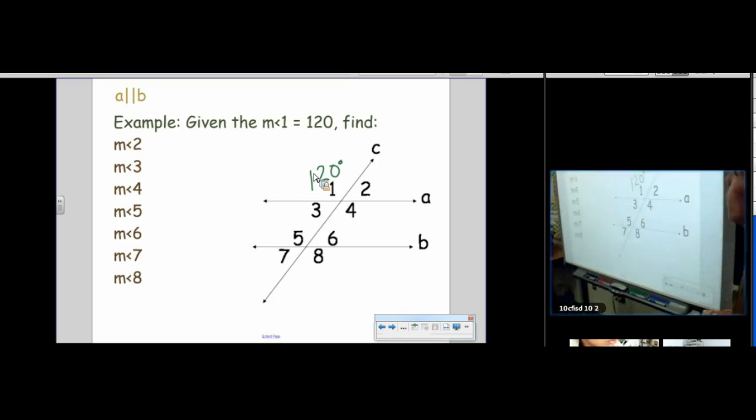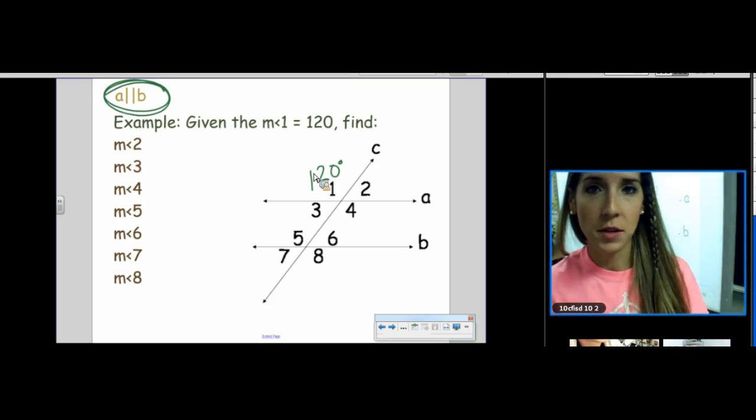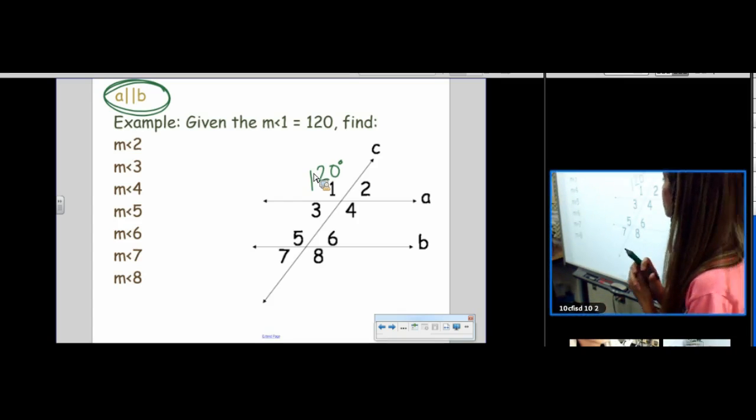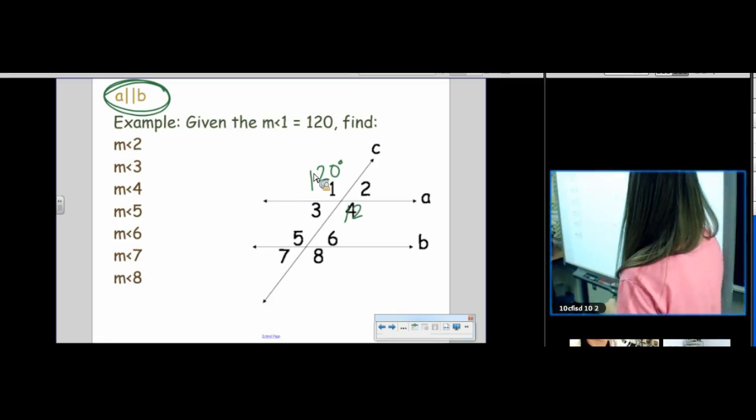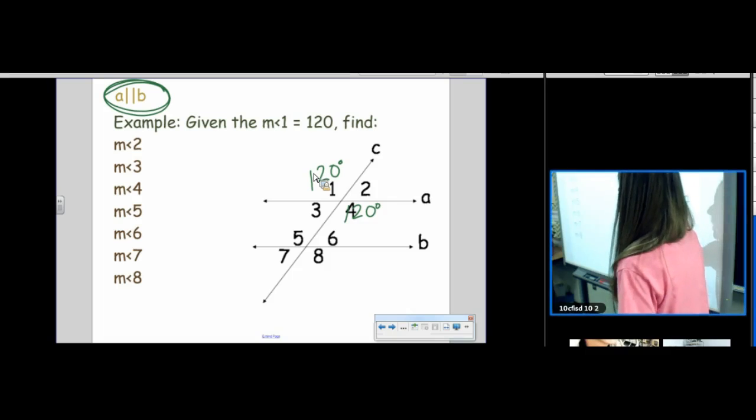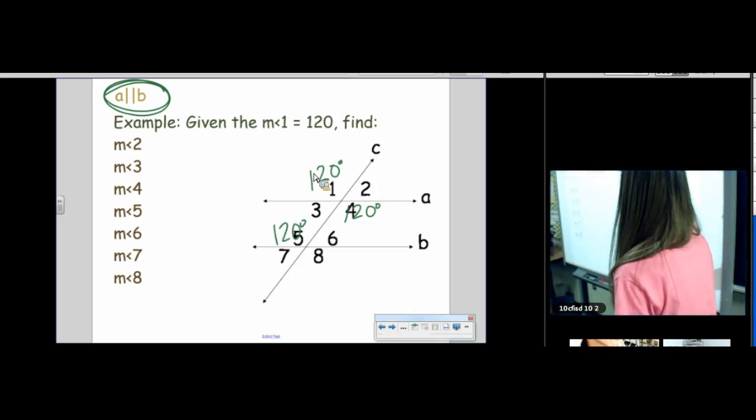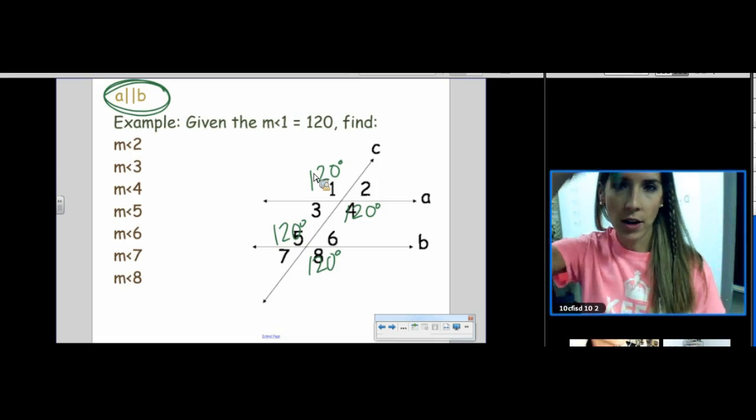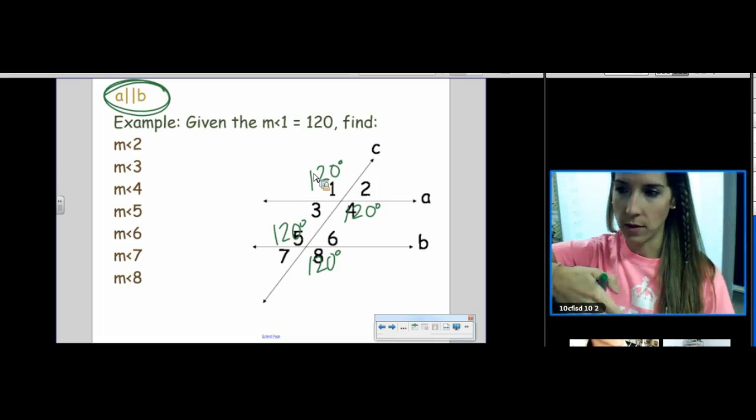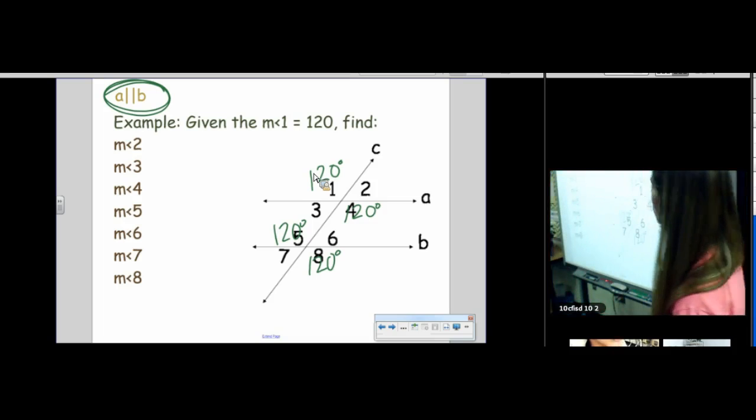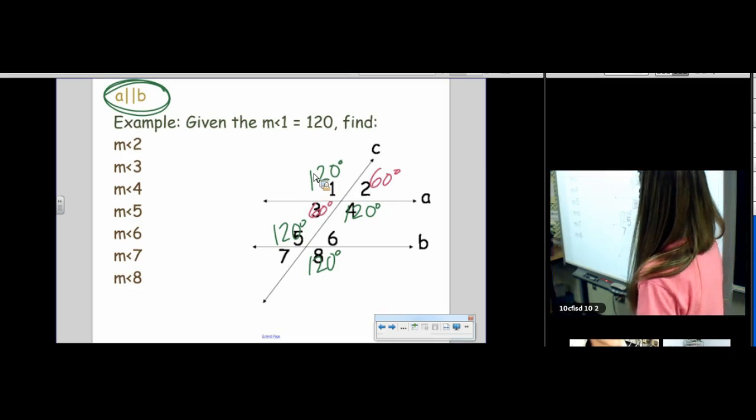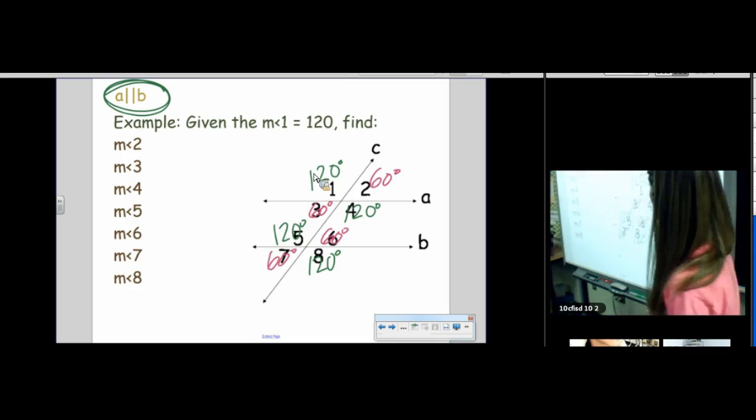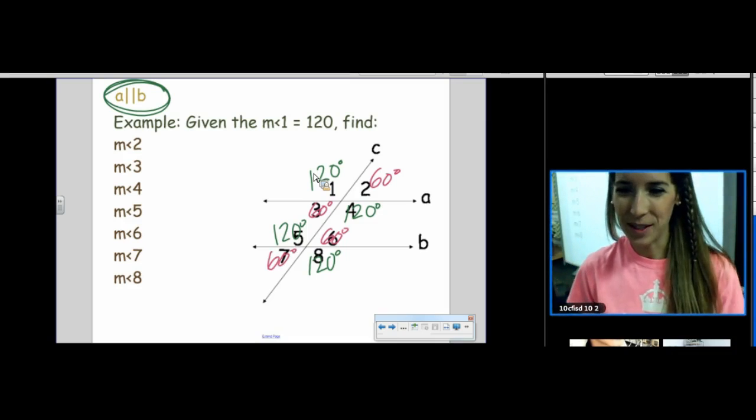Alright. So, like we said, as long as this is given to us, we know all eight angles when given one angle. So, let's name all the angles that are 123 or 120. Angle 1. Angle 4. Corresponding angles. So, angle 5. And then vertical angles. Angle 8. Notice it has a pattern. It kind of goes diagonally. 120, 120, 120, 120. So, then all of our other ones would be the supplement of 120. 60, 60, 60, 60, 60. Easy stuff. Especially when I make the numbers so pretty like that.